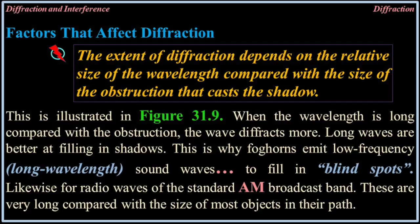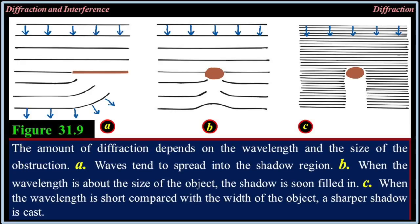Factors that affect diffraction. The extent of diffraction depends on the relative size of the wavelength compared with the size of the obstruction that casts the shadow. When the wavelength is long compared with the obstruction, the wave diffracts more. Long waves are better at filling in shadows. This is why fog horns emit low-frequency, long-wavelength sound waves to fill in blind spots. Likewise for radio waves of the standard AM broadcast band — these are very long compared with the size of most objects in their path.